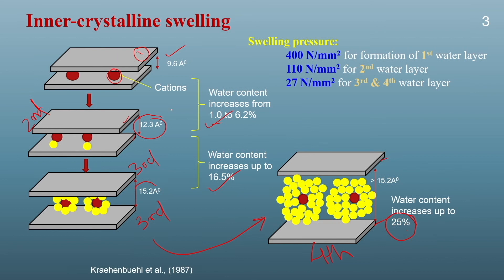To prevent inner crystalline swelling, a large amount of pressure is needed. To prevent absorption of the first layer of water molecules you need 400 Newton per mm² of pressure — this is known as swelling pressure, defined as the amount of pressure required to prevent the soil from swelling. For the second stage, you need 100 Newton per mm² to prevent absorption of the second water layer, and for the third and fourth layers you need 27 Newton per mm². We can see that with increase in the number of water molecule layers, the swelling pressure keeps decreasing.